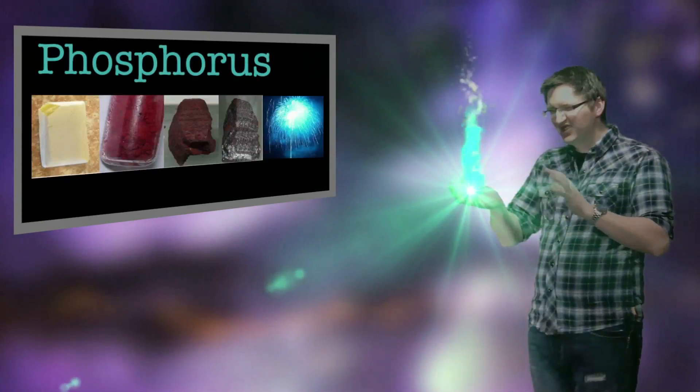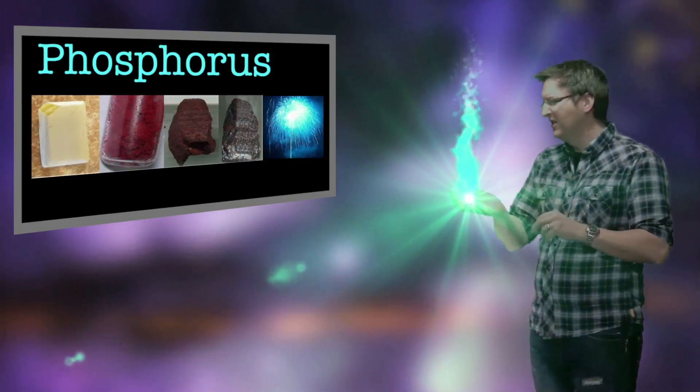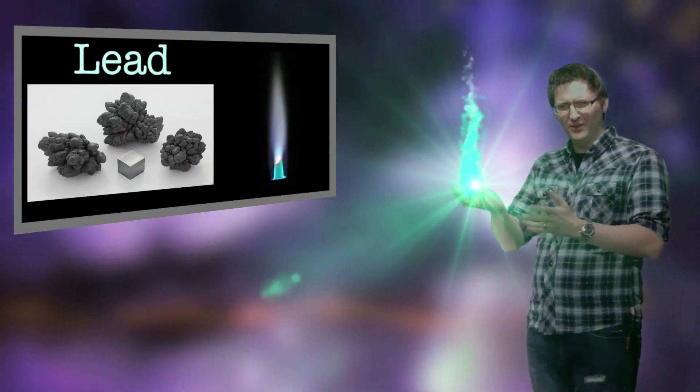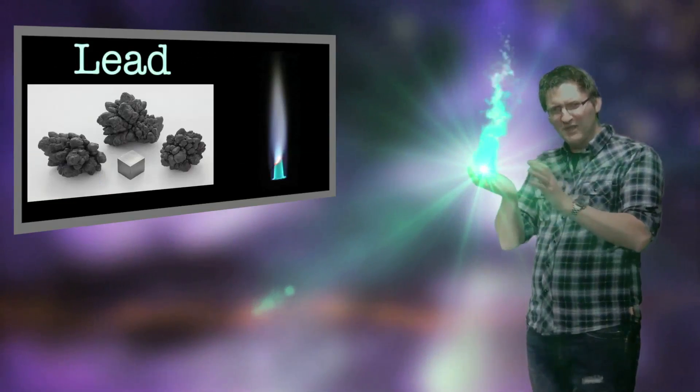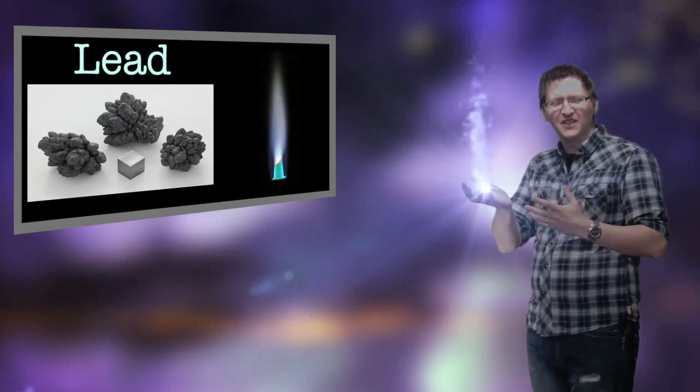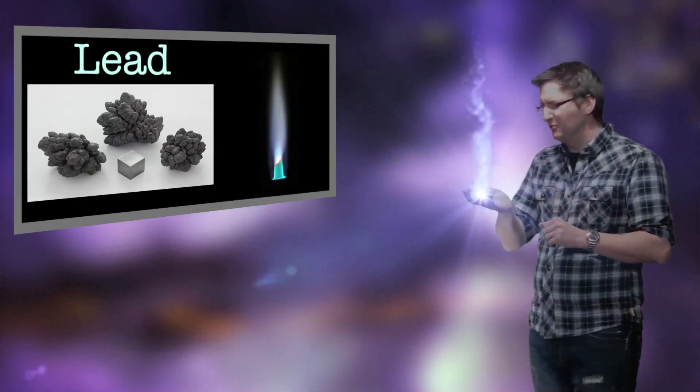Phosphorus. It's getting towards a turquoise blue green color to it. Lead. Lead's got a blue, but a really whitey blue color. A bit like what you'd see in electric arcs or something like that.